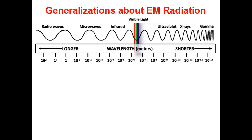Infrared comes after microwaves. Infrared is similar to what we'd think of as visible light, but it's not visible to us — some creatures like mosquitoes can actually see infrared light, but we can't. Then there's the light that's visible to us: red, orange, yellow, green, blue, indigo, and violet. ROYGBIV is the acronym for that, and I want you to know ROYGBIV if you don't already.